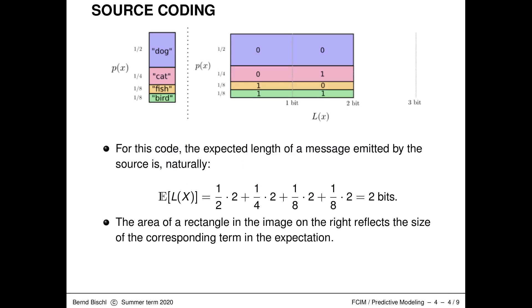We now have notation to discuss the length of code words. It makes natural sense to calculate the expected length of a message emitted by our source — this is just the expectation E[L(X)], where X is the random variable representing our source. For this specific encoding scheme using strings of length 2 always for all symbols, the average string length is of course 2 bits.